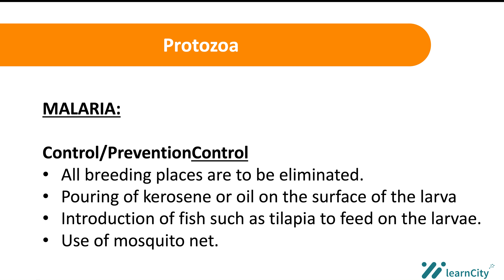We could also introduce fish, such as tilapia, to kill the larvae — they would feed on the larvae. Another way to prevent malaria is by use of mosquito nets, to prevent bites from the mosquitoes that cause malaria. Insecticides can also be used to kill the vector, which is the mosquito.